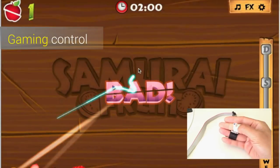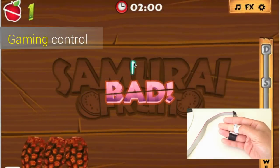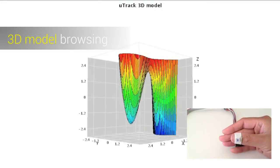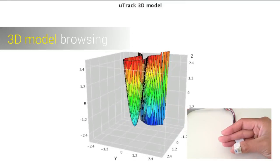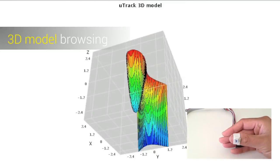We demonstrate the capability of using U-Track in real applications. By rubbing the fingers together or moving the thumb in the air, a user can play games or browse a 3D model in real time.